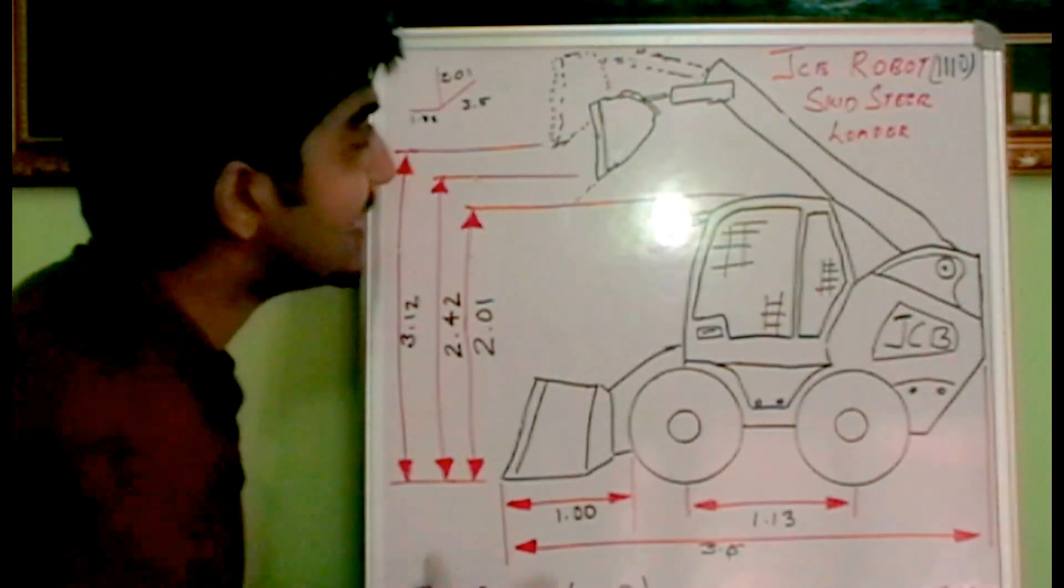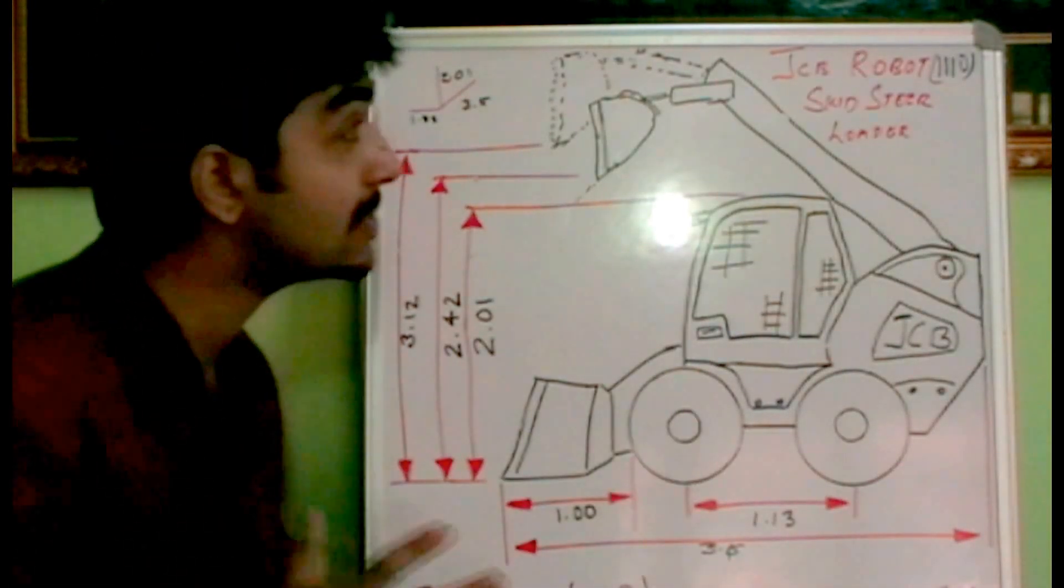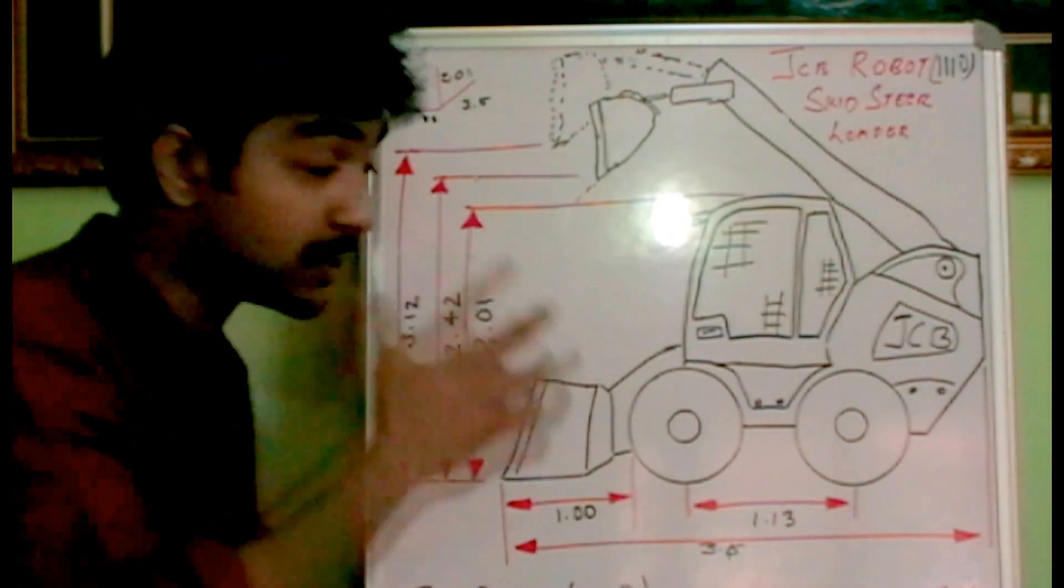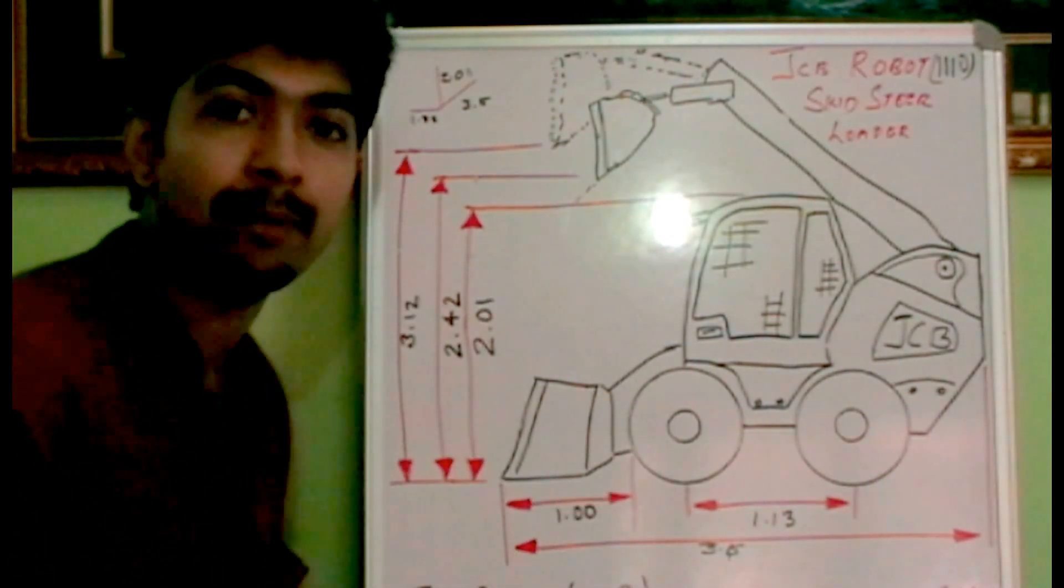Hi friends, today we'll be talking about a JCB robot. It is a skid steer class loader machine which is widely used worldwide in industrial applications.